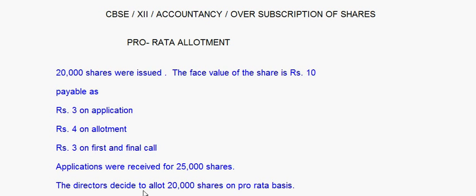Only 20,000 shares can be issued. So the next entry is Share Application Account debit to Share Capital Account — only 20,000 × 3 = ₹60,000 can be transferred to share capital. That means we have an excess of ₹15,000. Since the directors decide to allot 20,000 shares on pro rata basis, this excess amount will be adjusted towards allotment.